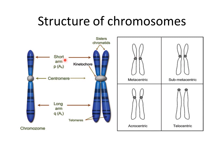Prior to cell division, chromosomes replicate and each then consists of two chromatids. During cell division, chromosomes can be visualized under the light microscope, and careful inspection reveals they exhibit different lengths and shapes. Each chromosome has a constricted region — the centromere — where the two sister chromatids are held together after replication. The constricted region also contains a protein known as kinetochore, which attaches the chromosomes to the mitotic spindles.